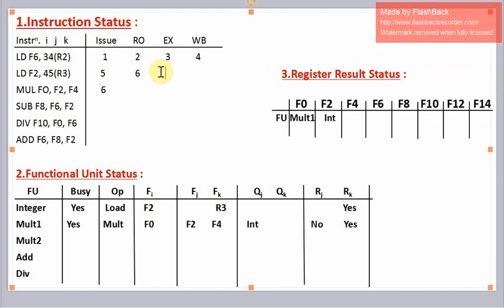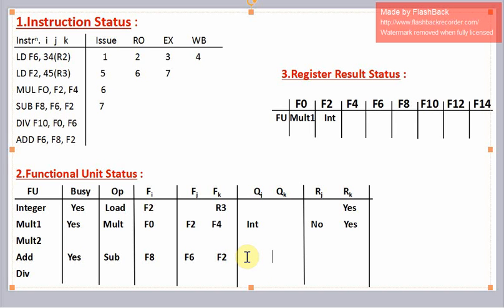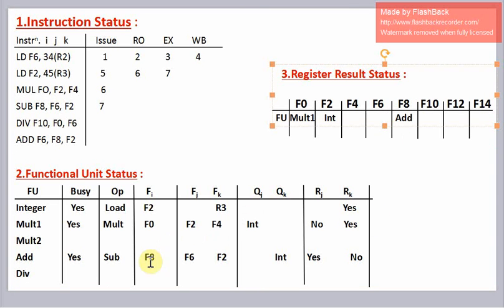In the seventh clock cycle, execution of the second load instruction completes. Also we can issue the subtract instruction. So the adder unit will now be busy. The operation to perform is subtract. Destination register is f8, source registers are f6 and f2. Now f6 is available but f2 waits for the integer unit. So the flag for fj representing f6 is yes, and for f2 the flag is no. Now f8 will be written by the adder unit.